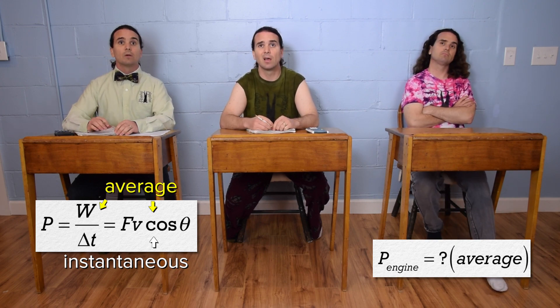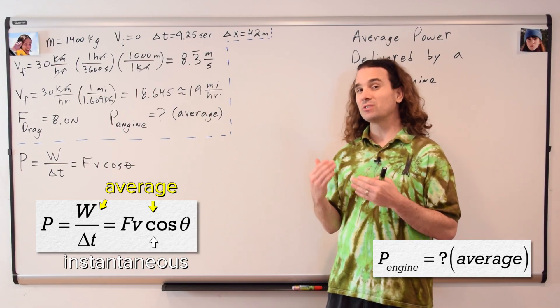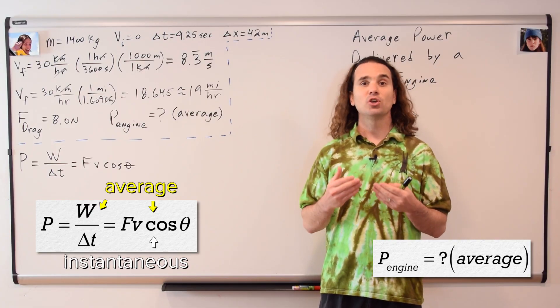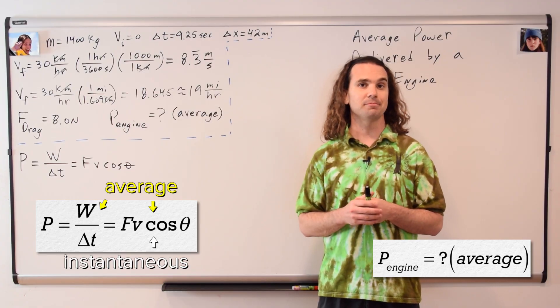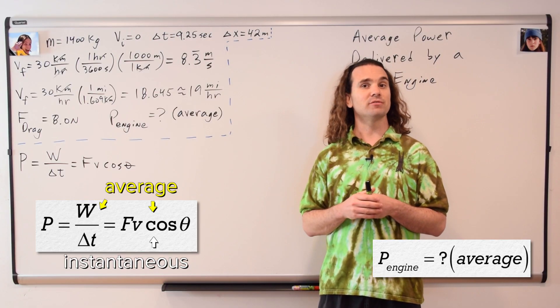Correct. When solving for average power, you can use either of the two equations and when solving for instantaneous power, you have to use the second of the two equations and you have to use instantaneous velocity. Let's use the first of the two equations and substitute in the equation for work.